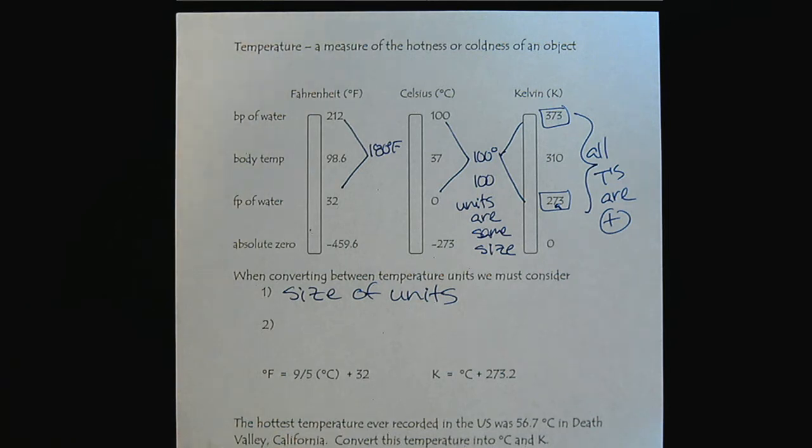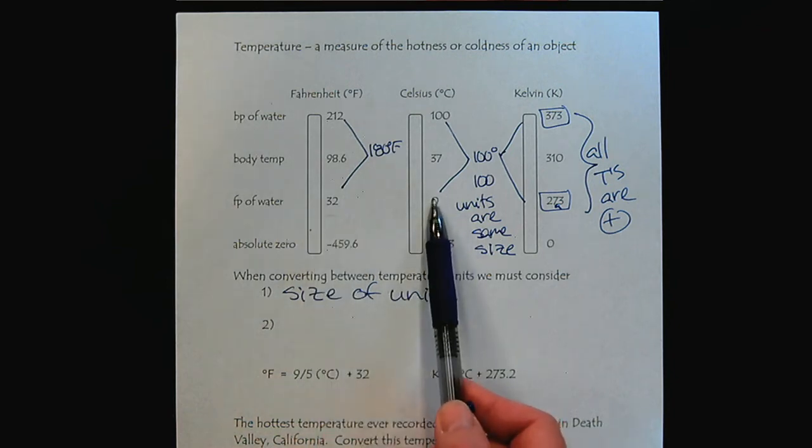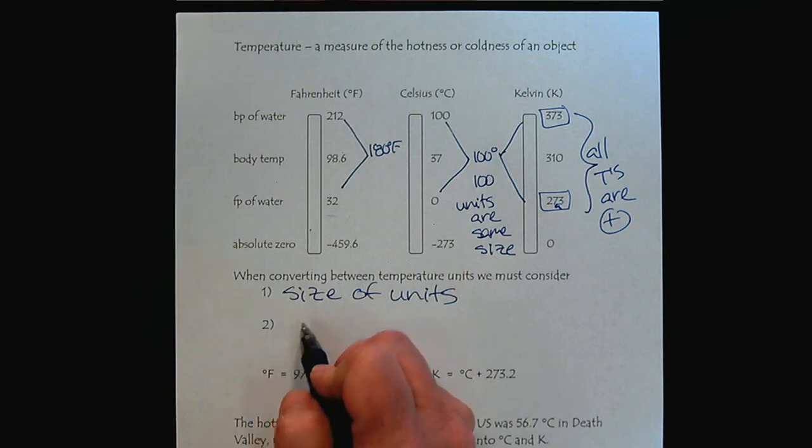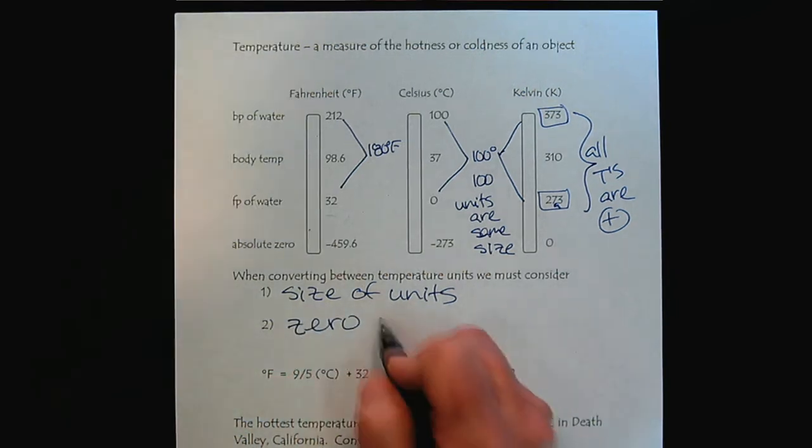Notice that the zeros are in different locations. The zero for Fahrenheit is somewhere down here, then we have the freezing point of water and absolute zero. So we have to make allowances for the location of zero temperature.